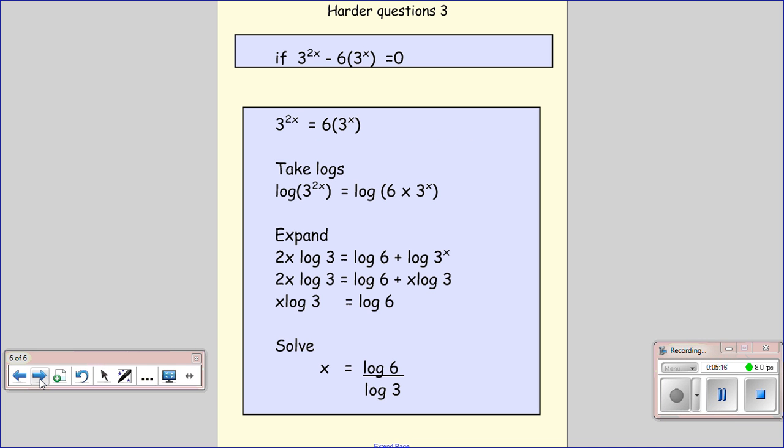Just one more. Here we have if 3 to the power of 2X minus 6 times 3 to the power of X equals 0, and we're trying to find X. First of all, just split it up and put it on both sides of the equation. So I've just added 6 times 3 to the X to both sides.